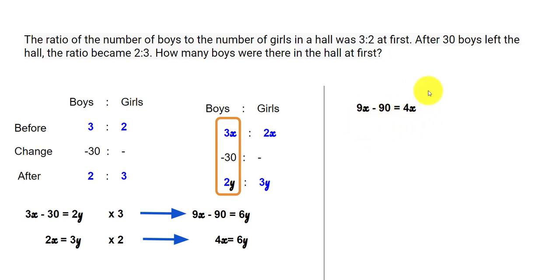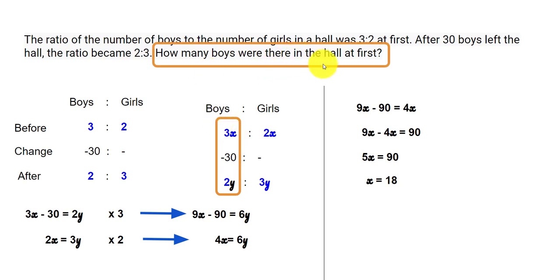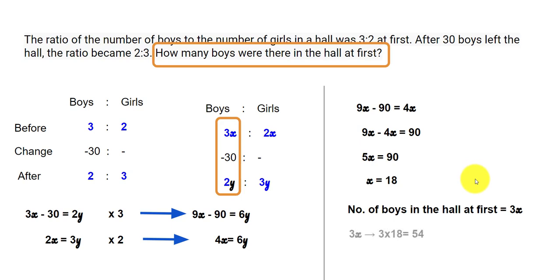Subtracting 4x from both sides and adding 90 to both sides gives us 9x minus 4x equals 90, which simplifies to 5x equals 90, so x equals 18. The question asks how many boys were there in the hall at first. At first there were 3x boys, so 3 times 18 equals 54 boys.